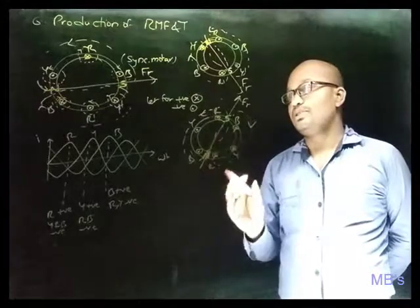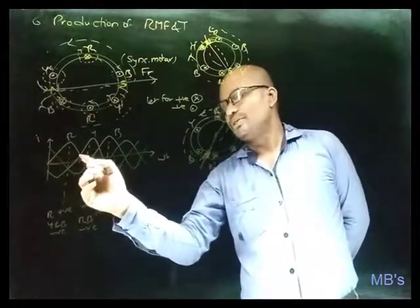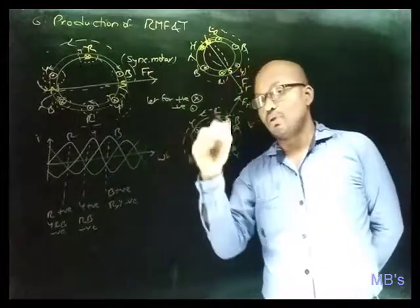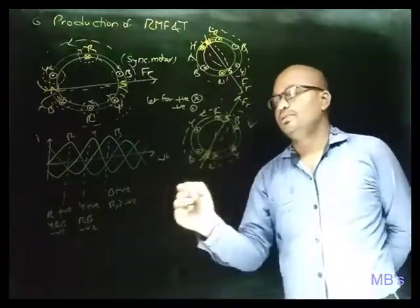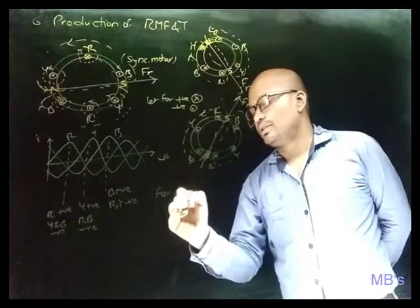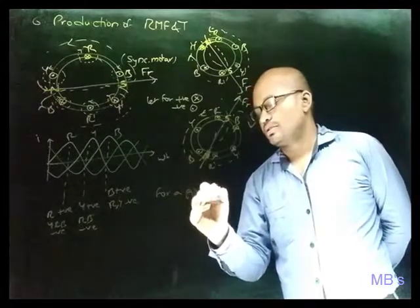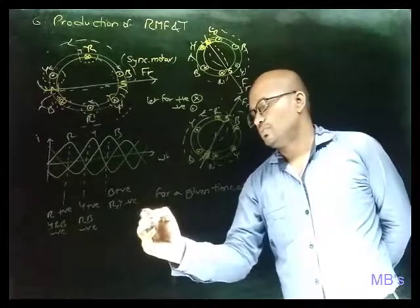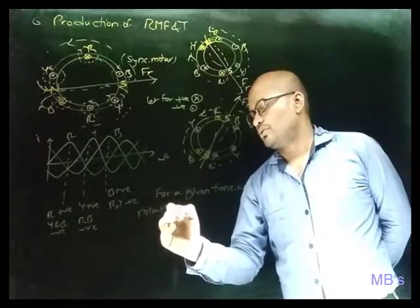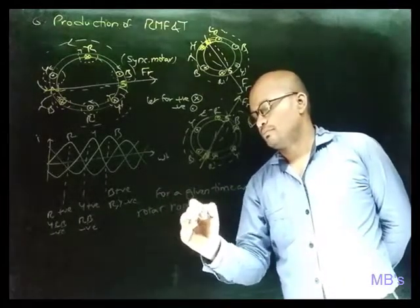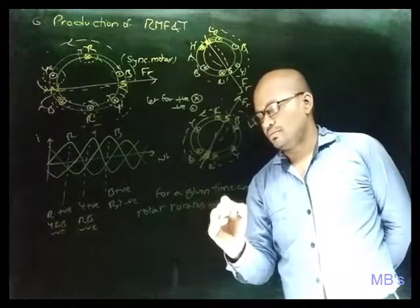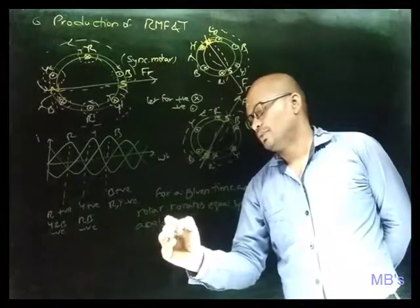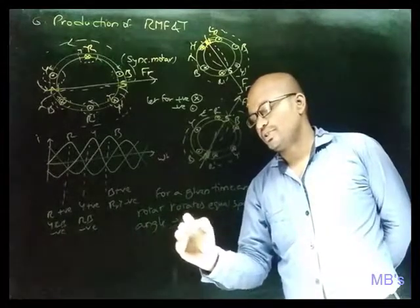From this, what you have to observe is that for a phase sequence of R-Y-B, the rotating magnetic field is clockwise. For a given time angle, the rotor rotates an equal space angle, which implies the rotor rotates at synchronous speed.